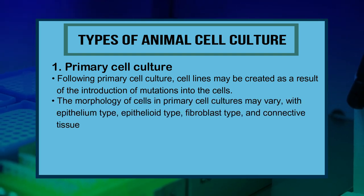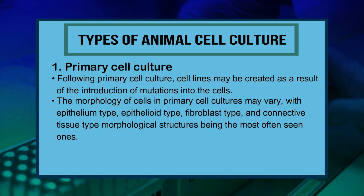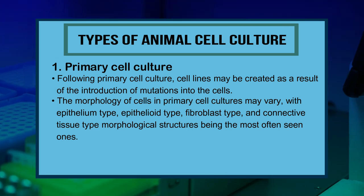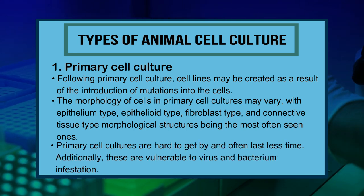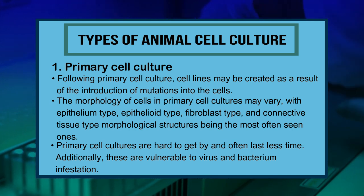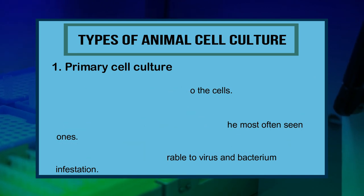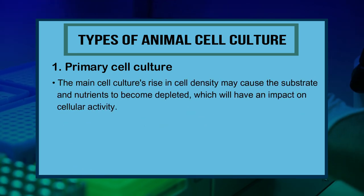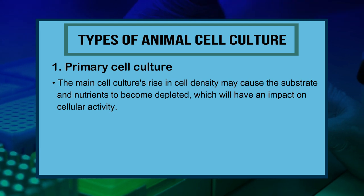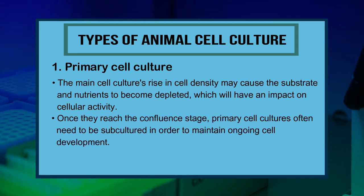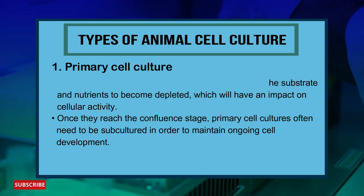Following primary cell culture, cell lines may be created through introduction of mutations. The morphology of cells in primary cell culture may vary, with epithelioid, fibroblast, and connective tissue type morphological structures being most commonly seen. Primary cell cultures are hard to obtain and often last less time; they are also vulnerable to virus and bacterium infestations. A rise in cell density may cause substrate and nutrient depletion, impacting cellular activity.